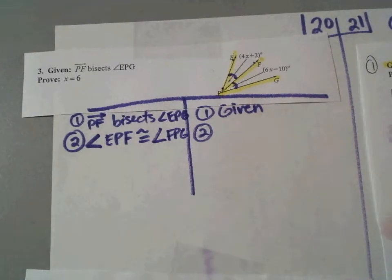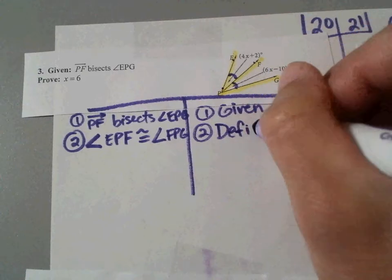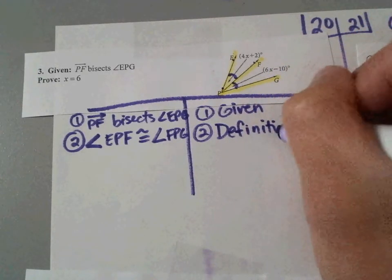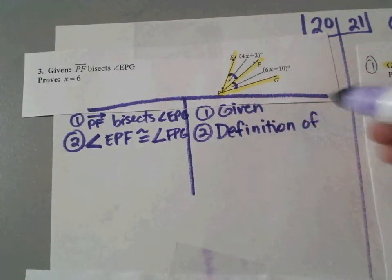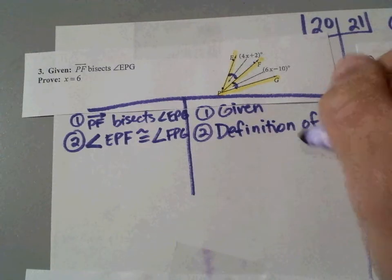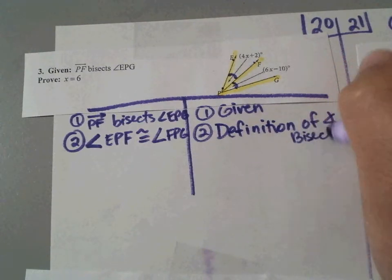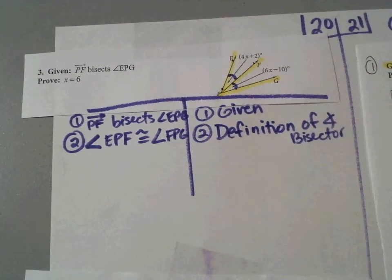So this would be definition of bisector. You can put angle bisector if you want. That would be a more formal term. Definition of angle bisector. Tayshawn. Definition of angle bisector. Okay.